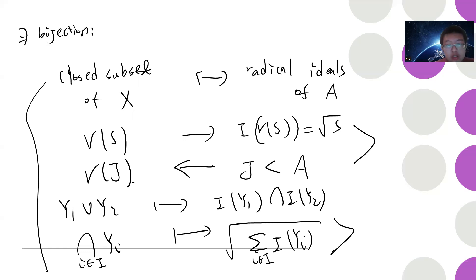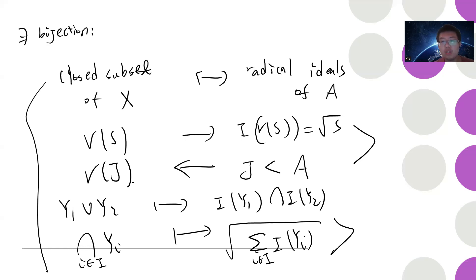This is probably the end of this video. Next time I will quickly explain the distinguished open sets and why they form a basis, and then we can construct a sheaf on each distinguished open set and glue them together to become an affine scheme.